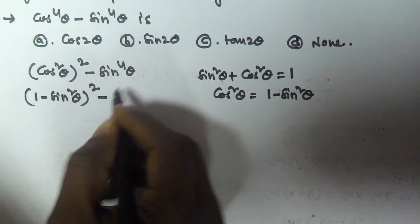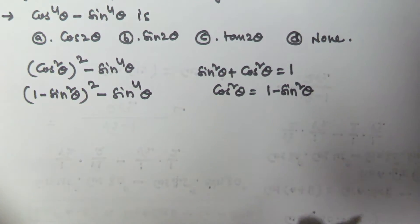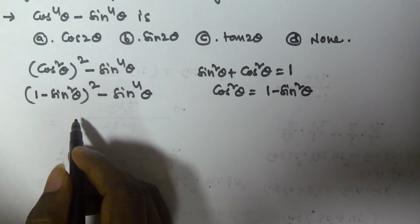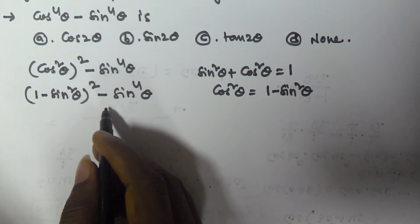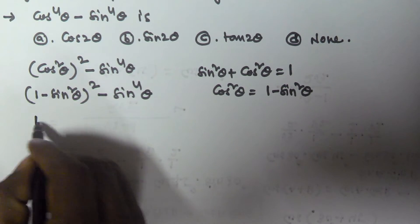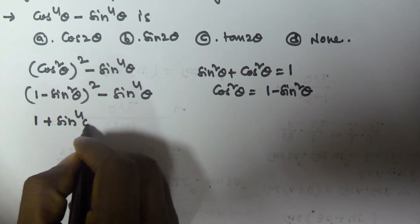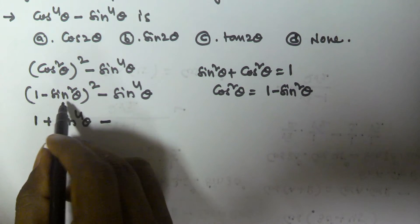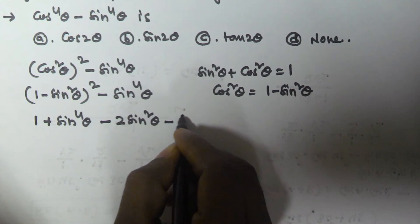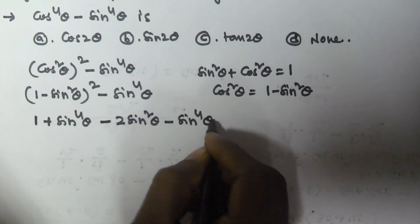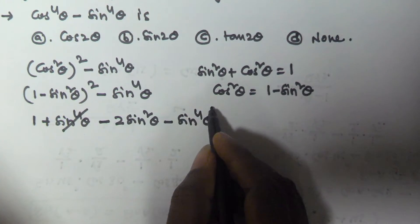That gives us (1 minus sine squared theta) squared, minus sine to the power of 4 theta. This is in the form of (a minus b) squared, which equals a squared plus b squared minus 2ab. So expanding: 1 squared plus sine to the power of 4 theta minus 2 times sine squared theta, minus sine to the power of 4 theta.